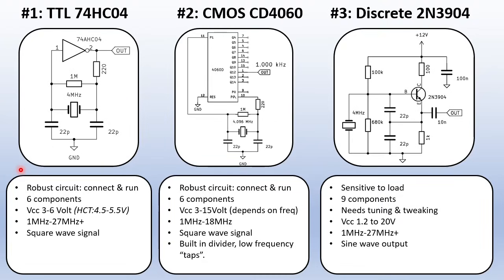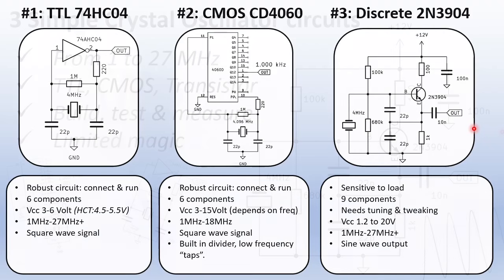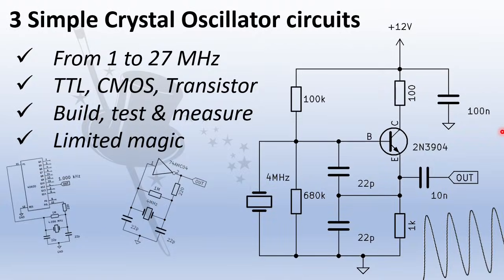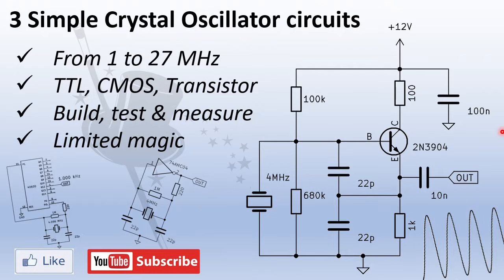The third circuit has more components and it is more sensitive. I needed some tuning and tweaking to get it working. The output cannot take any DC load, so keep this 10nF capacitor here. The voltage range is very wide. It can even work down to 1.2V, that really surprised me. I hope you liked the video. If it was useful for you, please like and subscribe and leave your experiences in the comments.